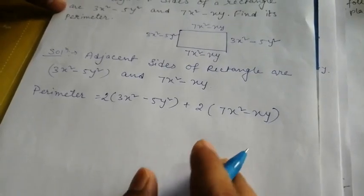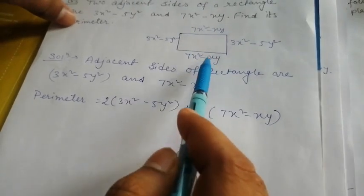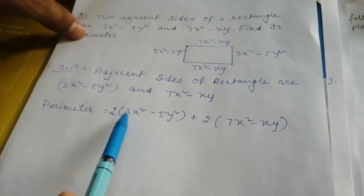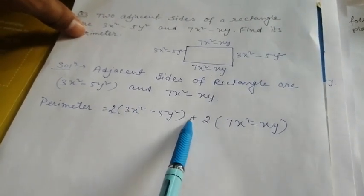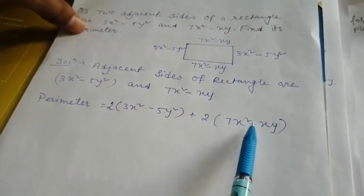Now if you observe, you can write this plus this, or notice the values are the same. So that's why I will write 2 multiplied by this one plus 2 multiplied by this one.